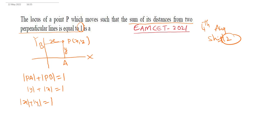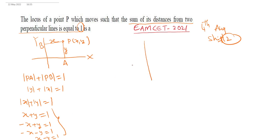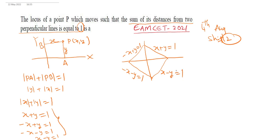Writing the four equations from |x| + |y| = 1: (1) x + y = 1, (2) -x + y = 1, (3) -x - y = 1, (4) x - y = 1. These four lines on the coordinate system form a square. The locus of point P is a square.